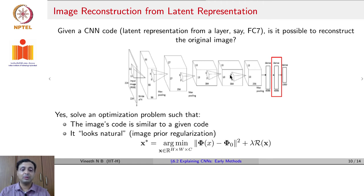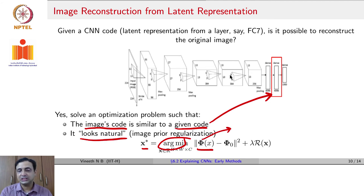This can be done again by solving an optimization problem with two criteria. One, we would like the reconstructed images code to be similar to the code that we are given. By code, we mean the representation obtained at the output of the FC7 layer. And the second is, we want that image to look as natural as possible. We are going to call that image prior regularization or image regularization. So we will keep these two criteria in the objective function, which means what we are going to get is x* is going to be a minimization problem over φ(x). φ(x) is take x propagated through AlexNet and take the FC7 layer output. That is what we refer as φ(x). It is a function which we are calling as φ(x).